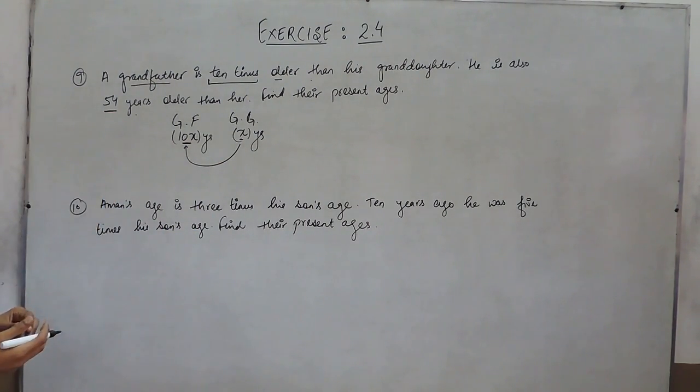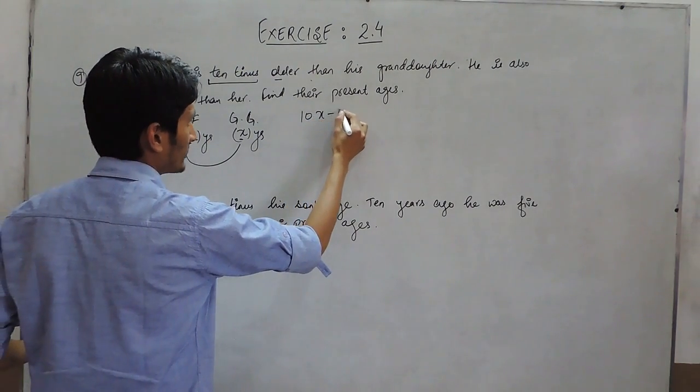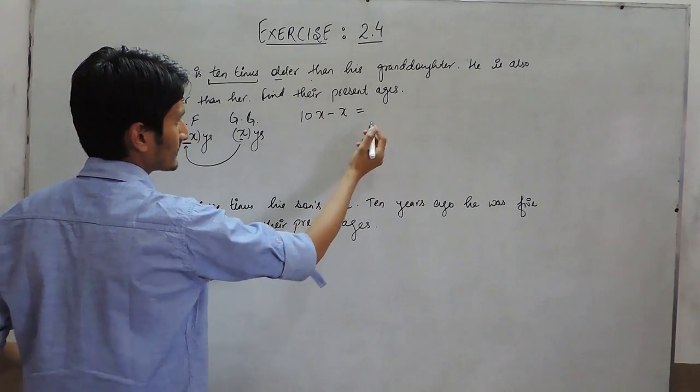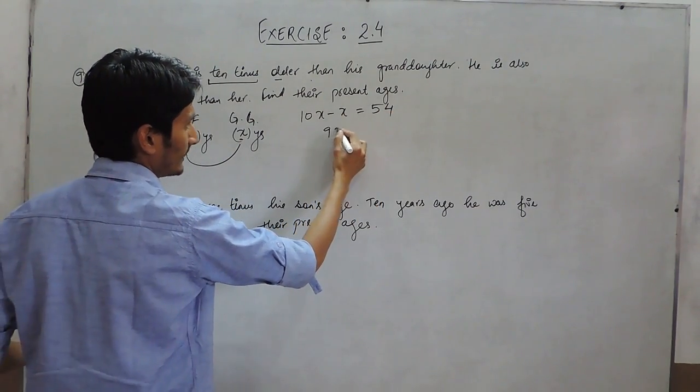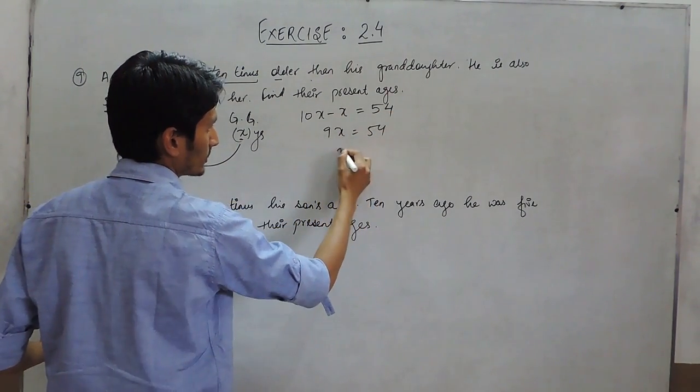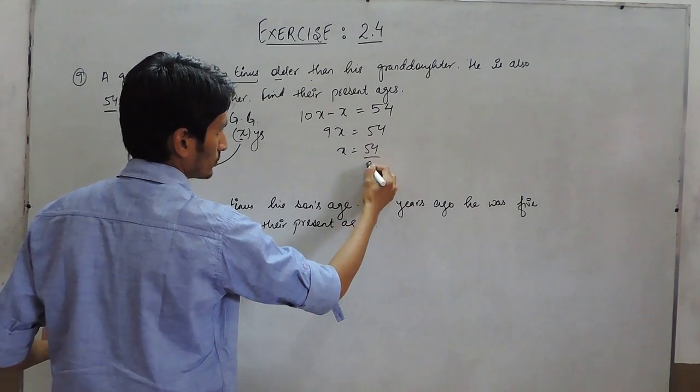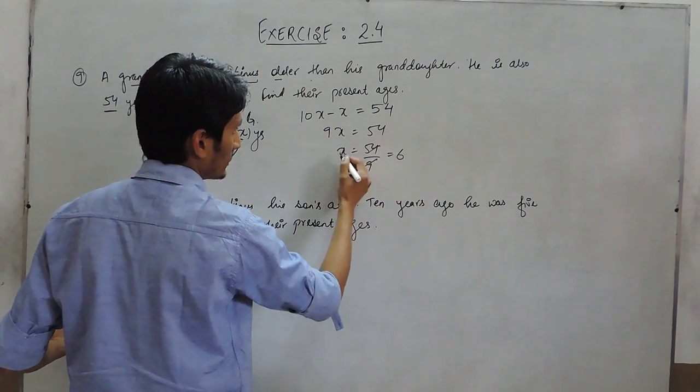So, the difference between them is 10x minus x which is equal to 54 years. This is 9x equals to 54 years. So, x must be equal to 6.